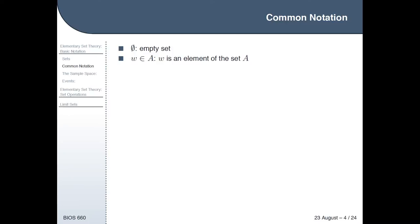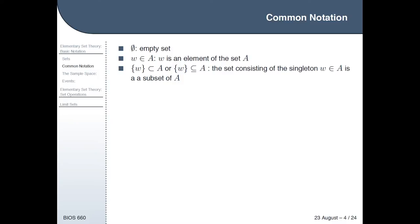This notation where you say W sort of like an epsilon A means that W is an element of the set A. For example, number 1 would be an element of the natural numbers because 1 is contained in the set of natural numbers. And the little cup notation indicates a subset.